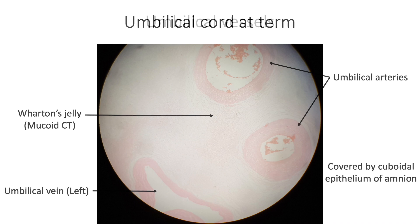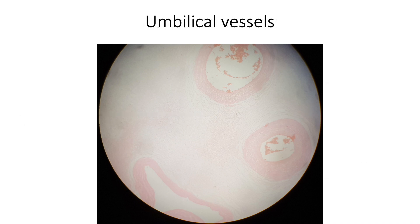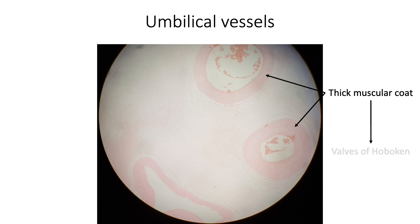The umbilical vessels show a thick muscular coat, and the smooth muscle fibers are spiralized and project into the lumen, forming the valves of Hoboken.